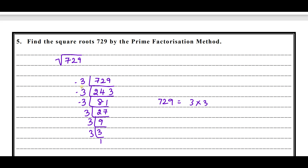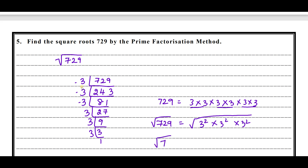So 729 equals 3 × 3 × 3 × 3 × 3 × 3. We need to find the square root of 729. Taking the square root, the square and square root cancel, leaving 3 × 3 × 3. That is 9 × 3 equals 27. Therefore the square root of 729 is 27.